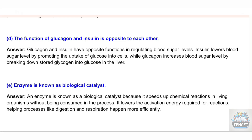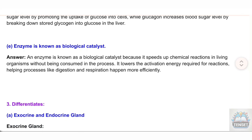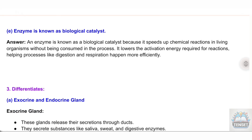E) Enzyme is known as a biological catalyst. Answer: An enzyme is known as a biological catalyst because it speeds up chemical reactions in living organisms without being consumed in the process. It lowers the activation energy required for reactions, helping processes like digestion and respiration happen more efficiently.